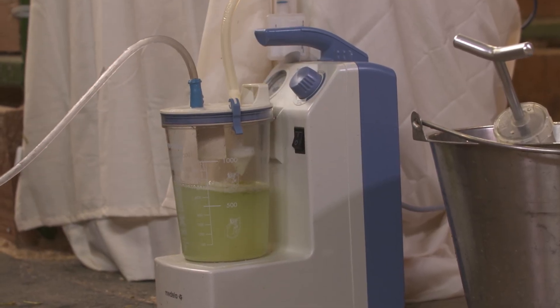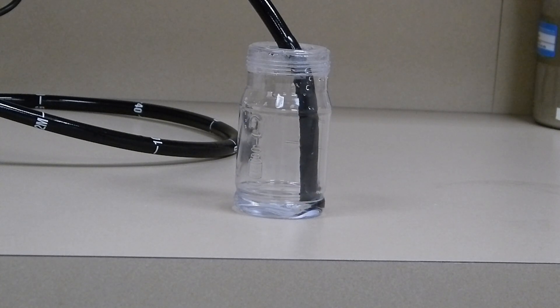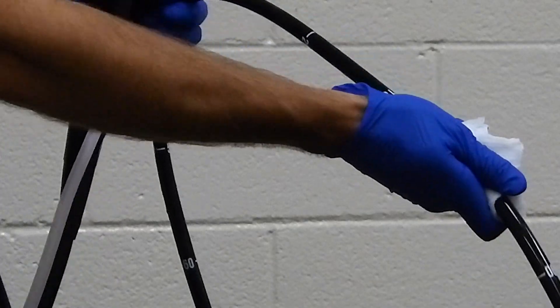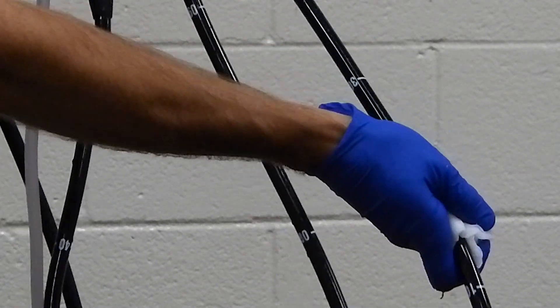Next, suction about 100 cc's of clean tap water through the biopsy suction channel. Using a clean damp cloth or gauze sponge, remove any surface residue from the scope.